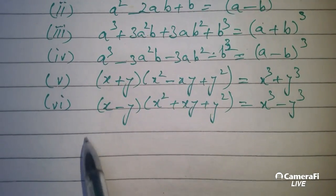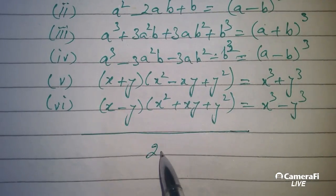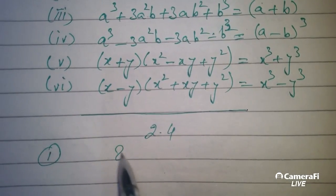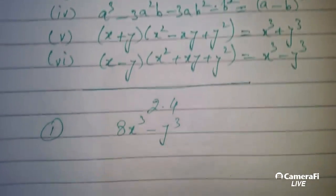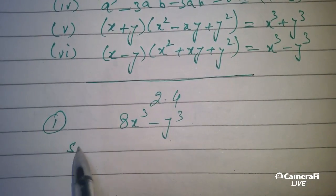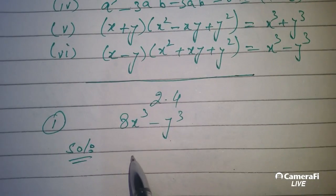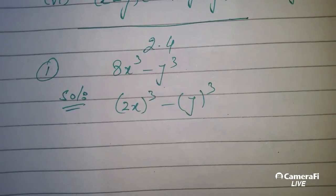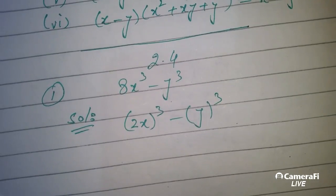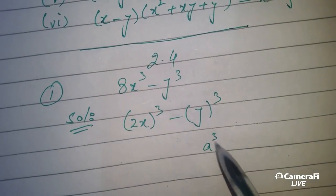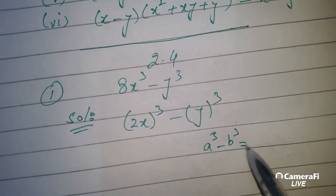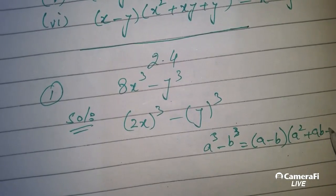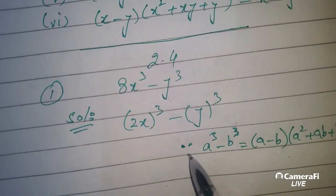So this was written as it is in the book. Now we go directly to Exercise 2.4. The first question: this can be 2x cubed, this can be y cubed. Now we apply directly the formula for the cube: a cube minus b cube is equal to a minus b, times a squared plus ab plus b squared. So this is our formula.